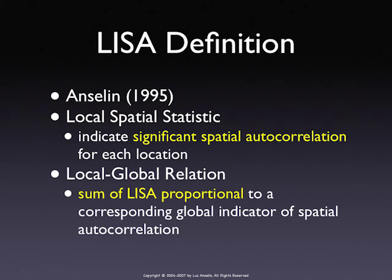The global Moran's I turns out to be the average of the local Moran's I statistics. So you can look at this more from a diagnostic point of view and try to identify: are there particular locations that are really driving my global statistic? Or is this basically spread out and everybody contributes more or less equally? This is important because if the whole thing is driven by one or two locations, then we don't have our spatial stationarity — our equilibrium assumption — which we need. And that's a very important thing to look at as a diagnostic.